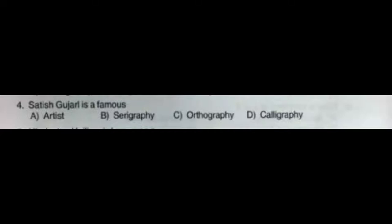Question number four: Satish Gujaral is a famous — option A: artist, option B: serigraphy, option C: orthography, option D: calligraphy. The correct answer is option A: artist. Question number five: Hindustan Unilever is known as — option A: pharma company, option B: FMCG company, option C: watch company, option D: leather company. The correct answer is option B: FMCG company.